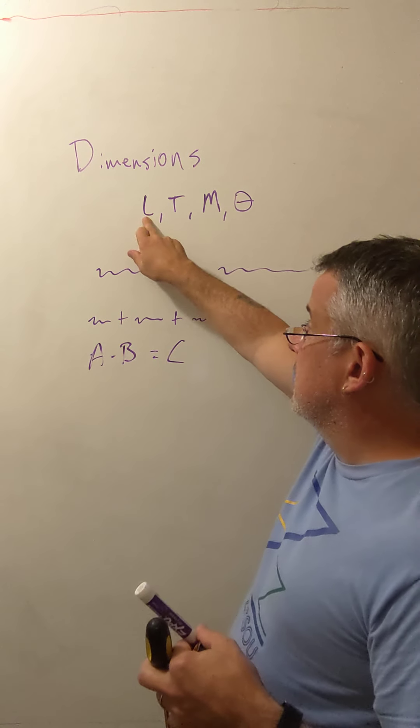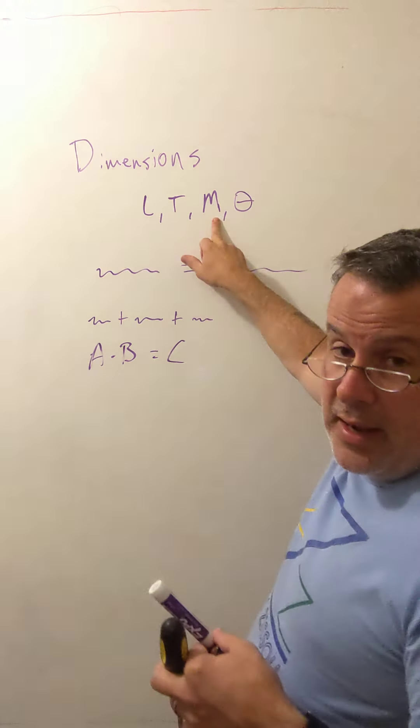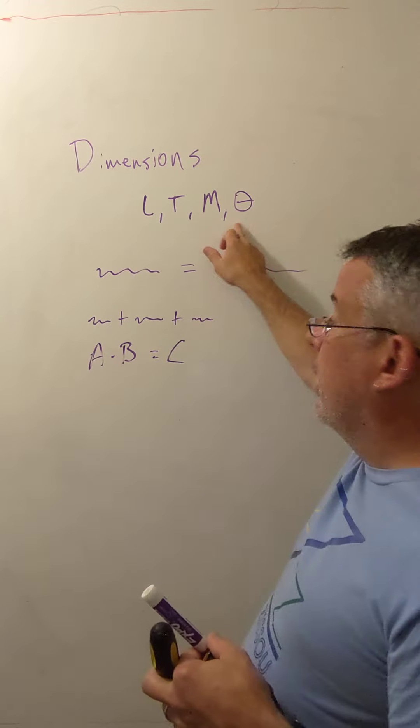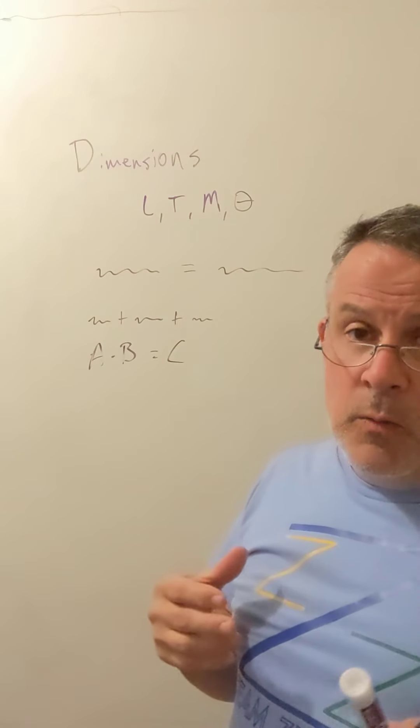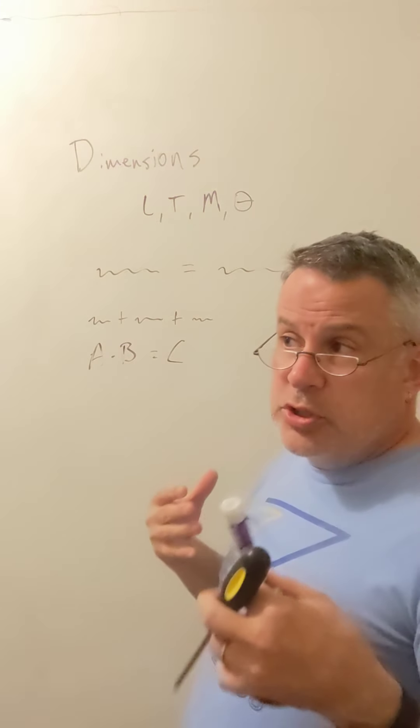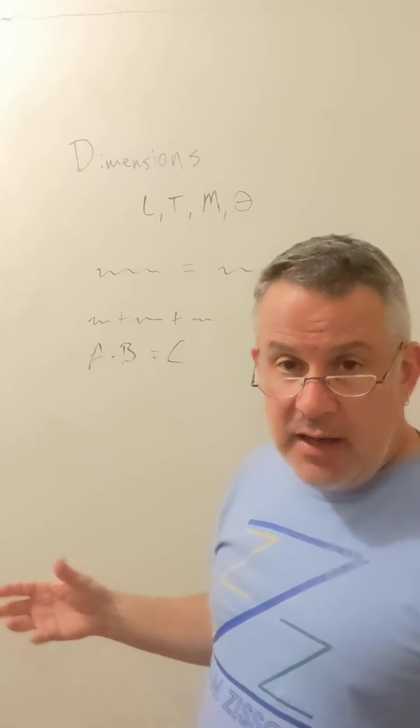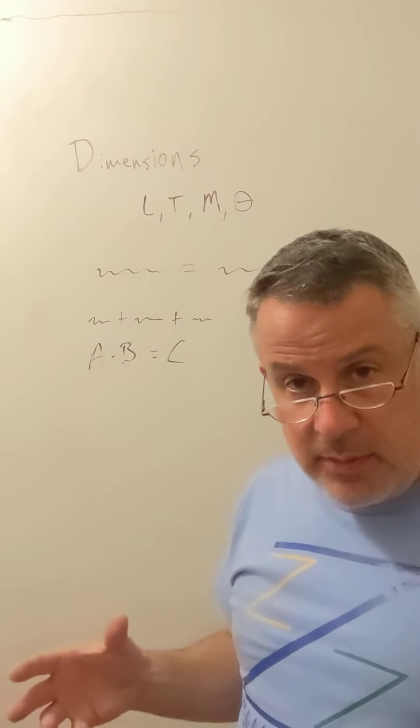So what are dimensions? Dimensions are things like length or time or mass or temperature that describe the kind of measurement, the kind of quantity that something is.